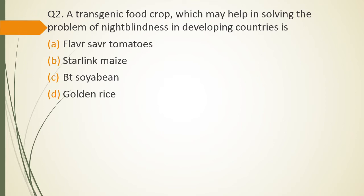Question No. 2: Transgenic food crop which may help in solving the problem of night blindness in developing countries is Flavor Saver Tomato, Starlink Maze, Bt Soya Bean, Golden Rice. The correct answer is option D Golden Rice. Golden Rice is rich in Vitamin A and deficiency of Vitamin A causes night blindness. So Golden Rice can help in solving the problem of night blindness.